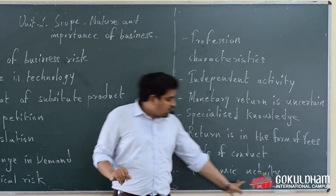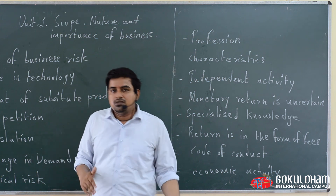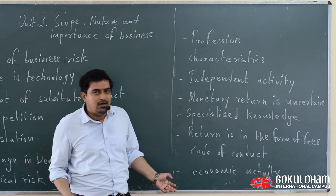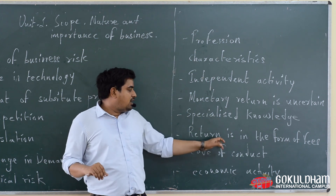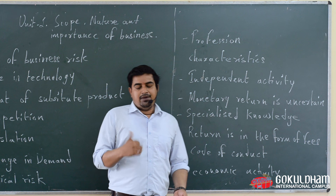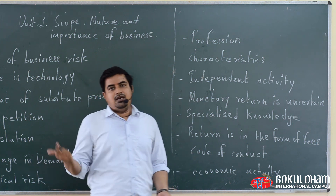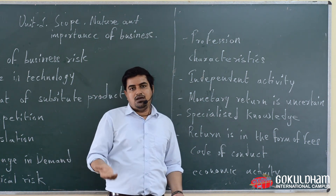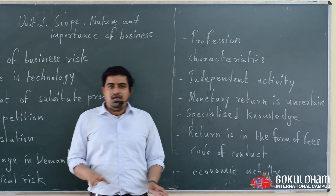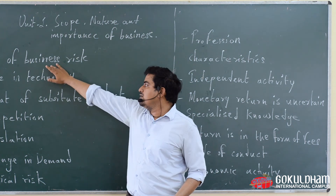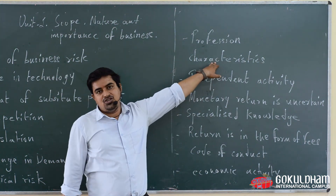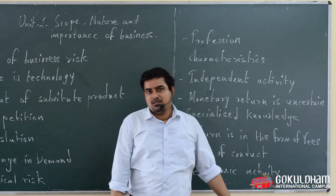The sixth characteristic is that profession is also an economic activity, because it is done for earning a return in the form of fees. यहां इसको भी economic activity इसलिए consider किया गया है क्योंकि इसमें भी कुछ earn करने का motive होता है। Today I have explained the causes of business risk and about profession and its characteristics. Thank you.